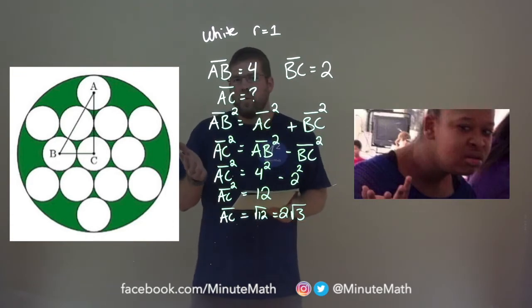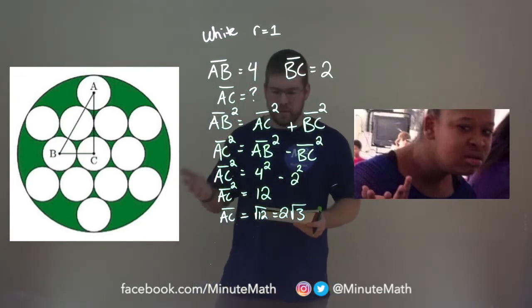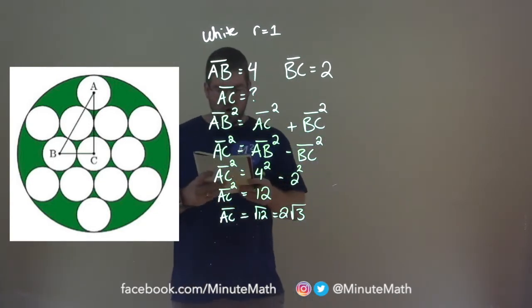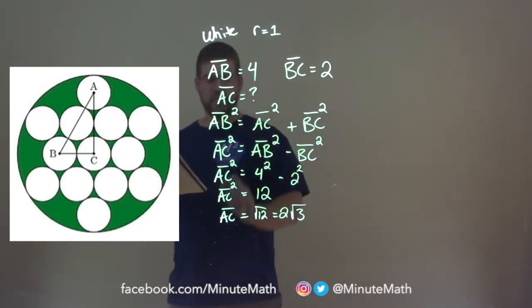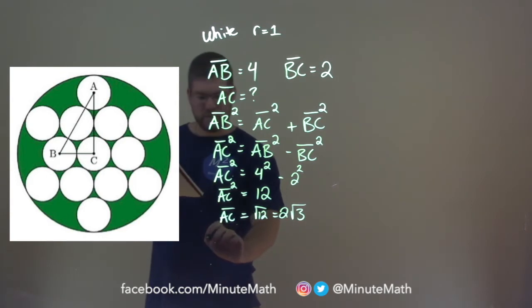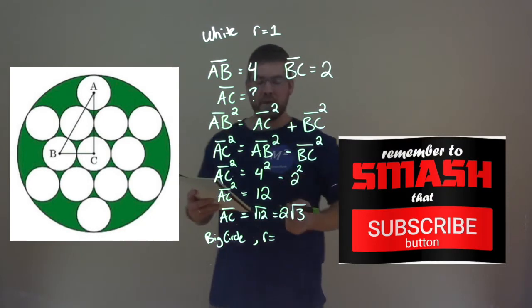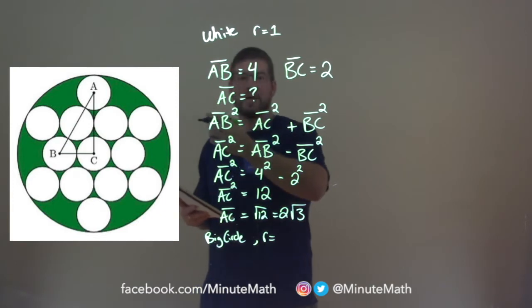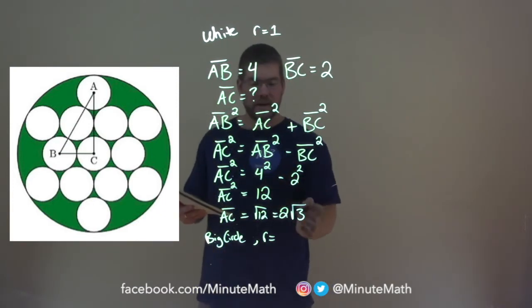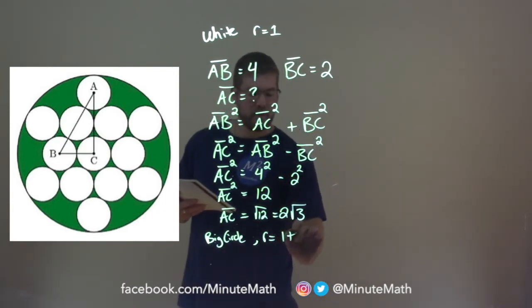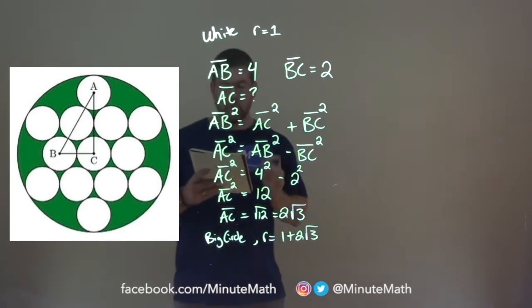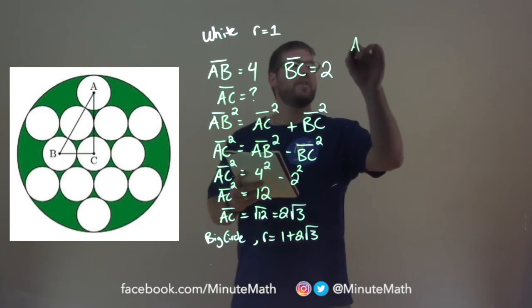But where do we go from here? How does this help us? Well we want to find the area of the big circle. One thing we know about the big circle, the radius of that is equal to the length of AC plus 1, right? The radius of the white circle continues that. We can see now the radius of the big circle is 1 plus 2 square root of 3. Now this is going to be crucial. So let's go find the area of the big circle.